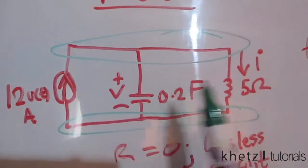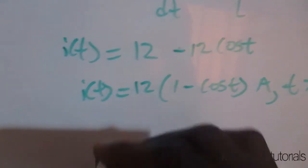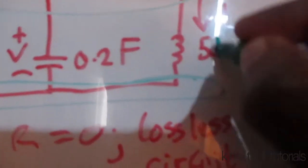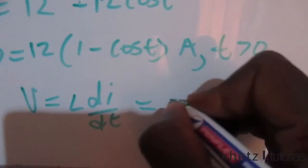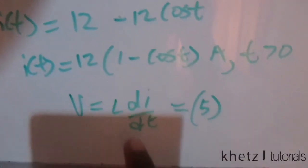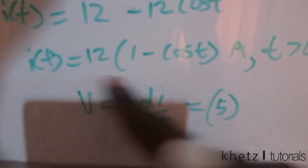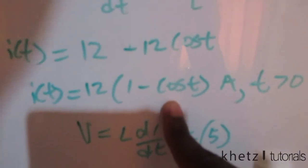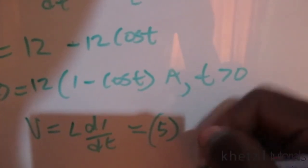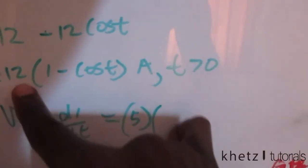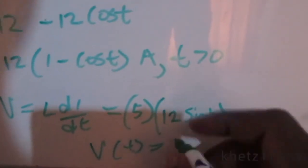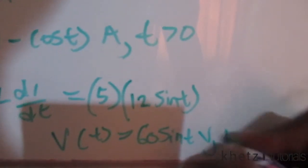Now we find v(t). Since v is the voltage shared across all elements, we use the inductor: v = L·di/dt. The inductor value is 5 H. Differentiating i(t) = 12(1 − cos(t)) gives di/dt = 12·sin(t). Therefore v(t) = 5 × 12·sin(t) = 60·sin(t) volts for t > 0.